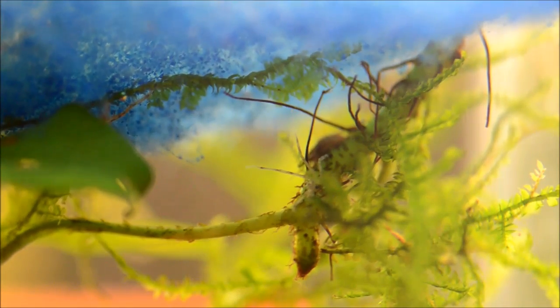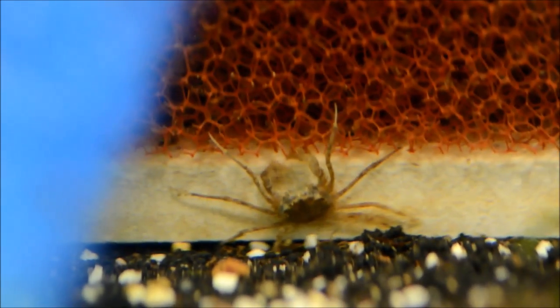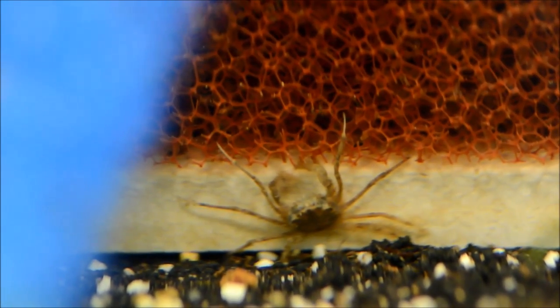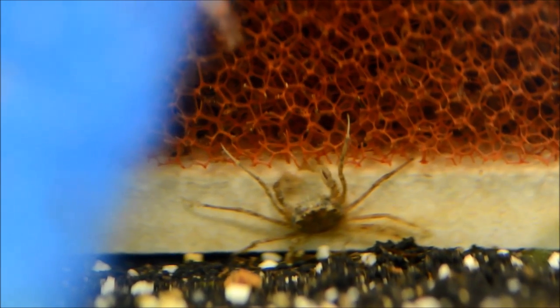You'll rarely see these guys out in the open areas of tanks. You'll often see them like this one. That's why I use this sponge filter. They really like the porosity of the sponge.